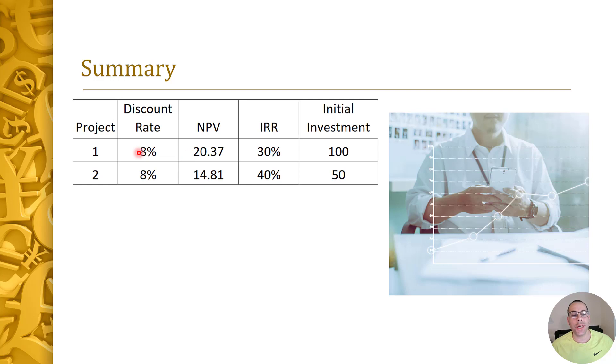But if we could only do each project once, then project one would probably be better because if we did project two, even though we get a 40% return, the other $50 is just sitting in the bank account earning one percent interest. So when you combine project two and $50 sitting in the bank, it's still less than $20 of NPV. But if you are able to invest more than $100, then you probably should take on both projects.